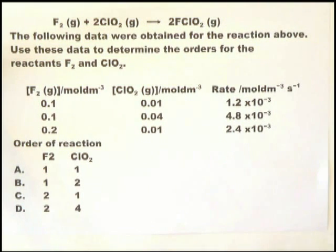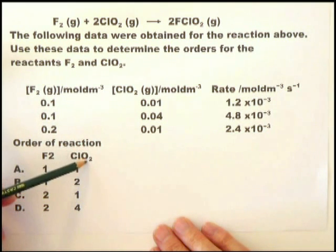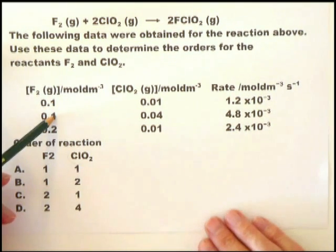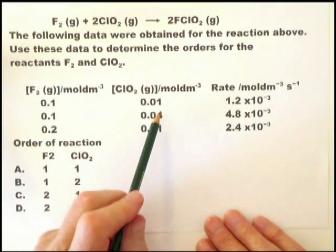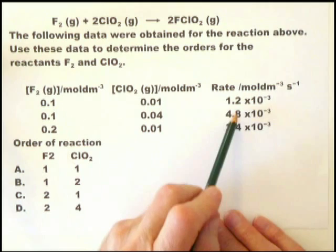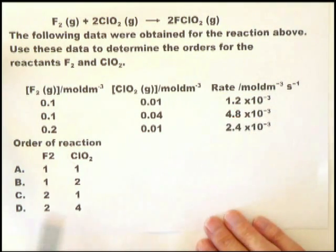This is a question that more often than not is a paper 2 question. However, occasionally it's brought into paper 1. When that happens, the numbers are much simpler. But the principles are the same. Let's look at the order for ClO2. We choose the two groups where the concentration of the fluorine is the same. That allows us to look at the chlorine dioxide.